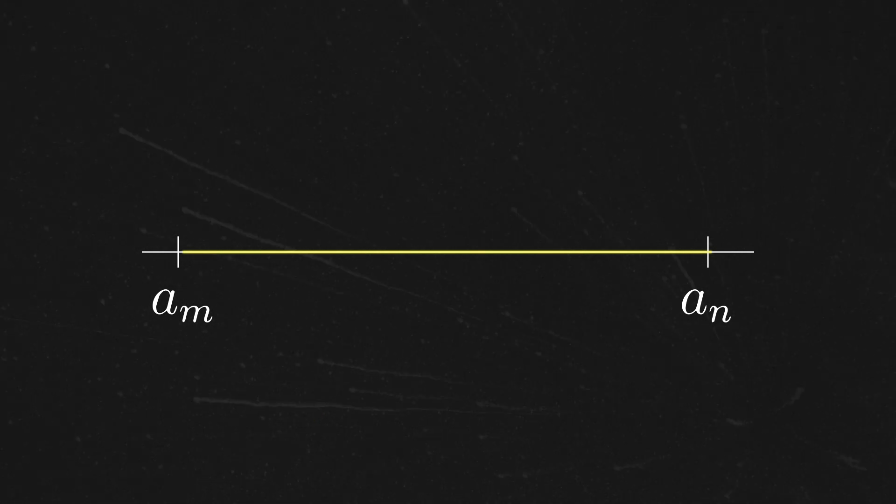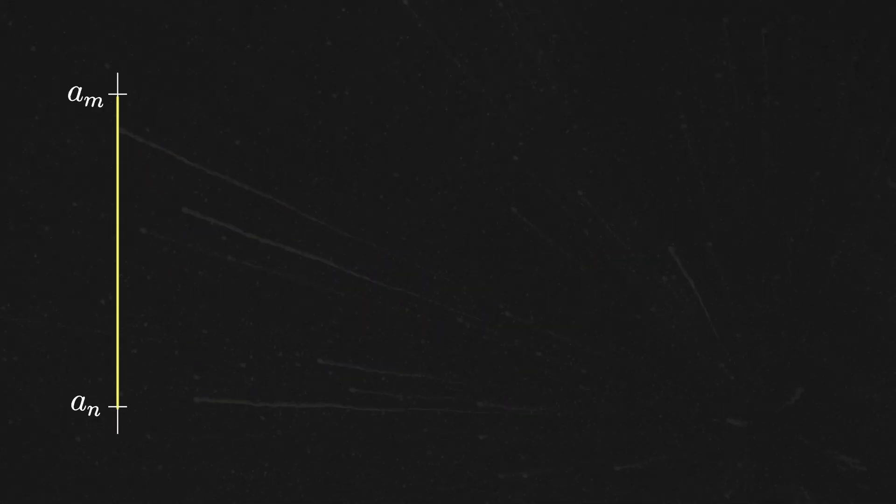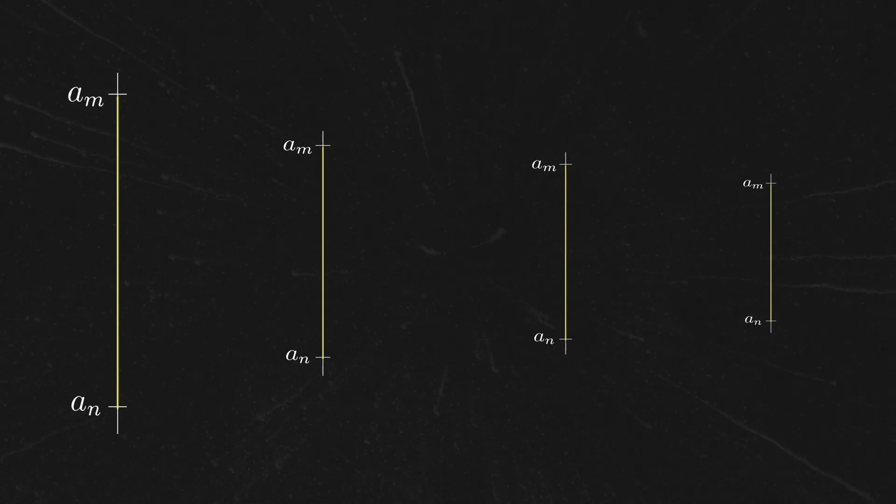Now, we want to express the idea that the further down the sequence we go, the smaller the distances get, so that their differences tend to zero.